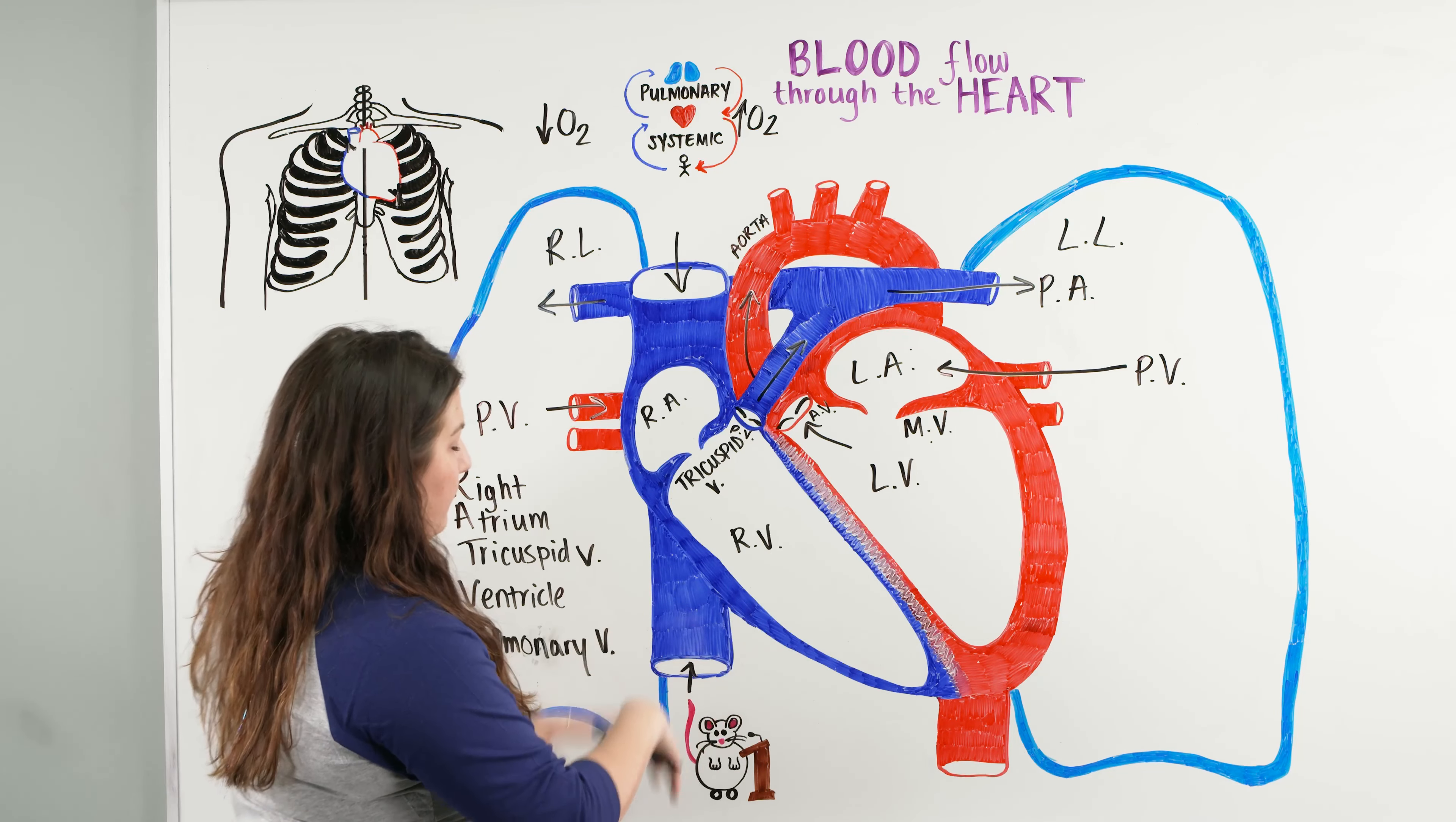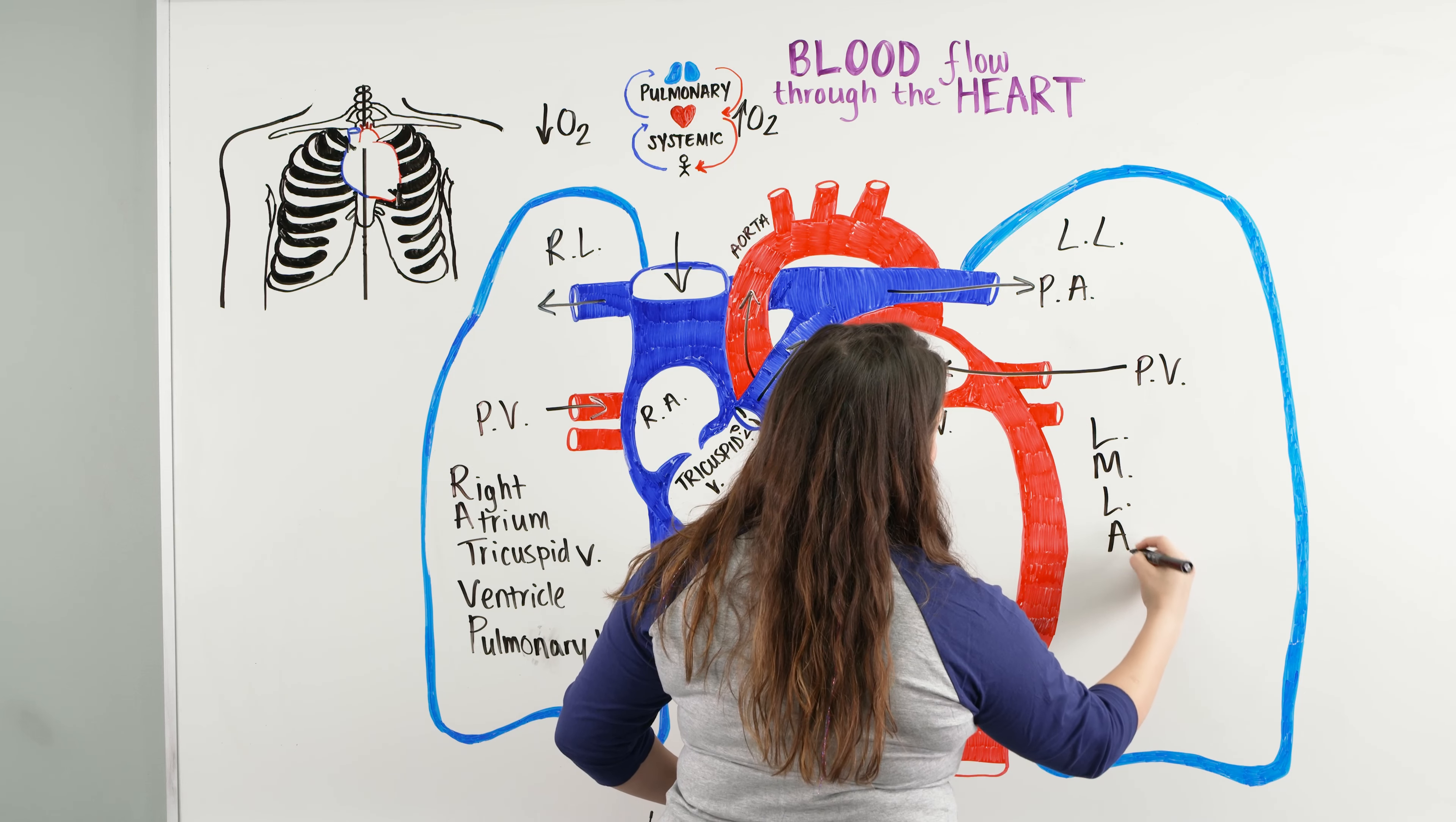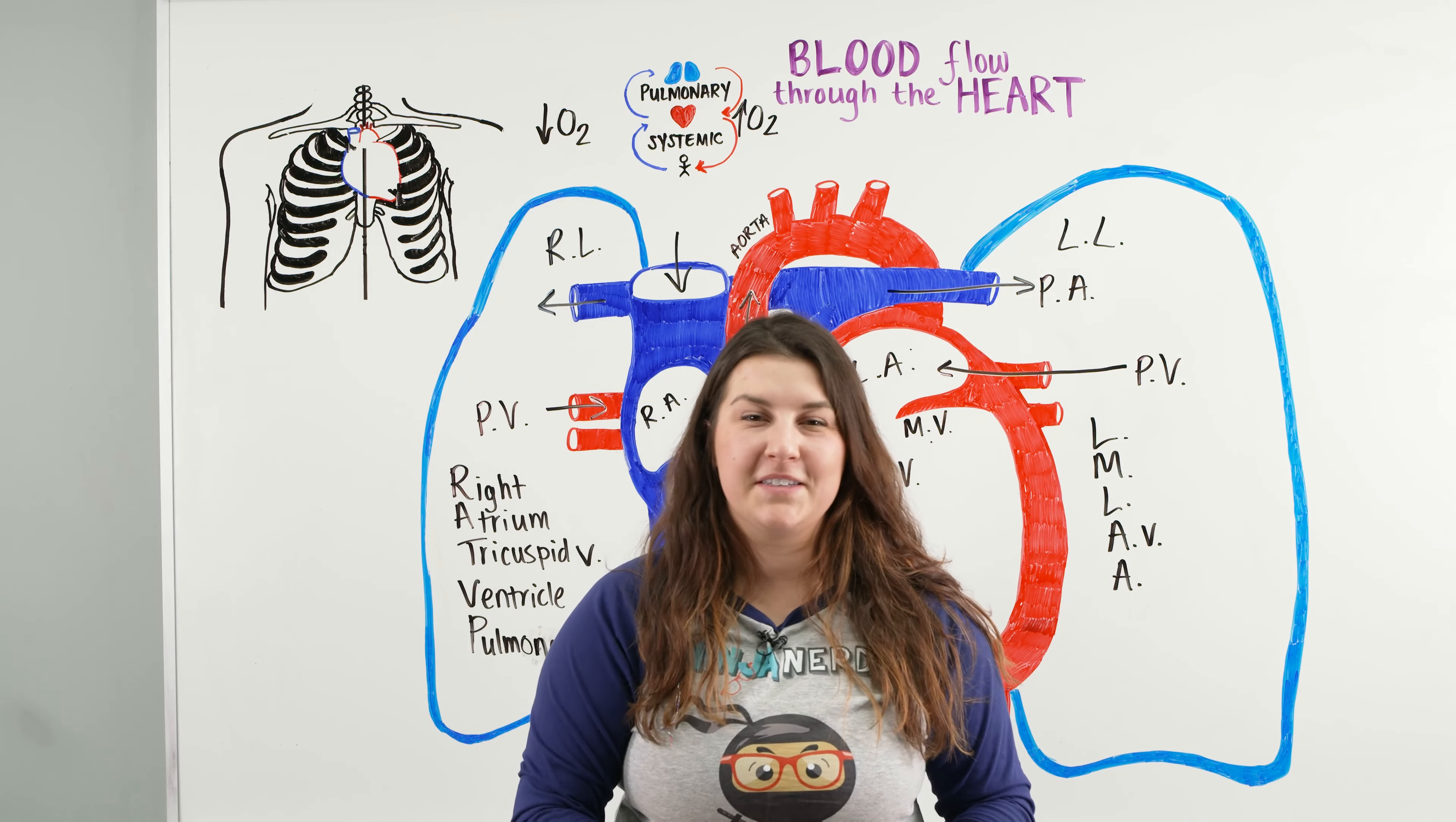So once we're in the pulmonary vein, we're going to the lung, and then we're going to the left atria, the mitral valve, the left ventricle, the aorta valve, and the aorta. And that's it. That's blood flow through the heart. Hope you guys like this video, and as always, until next time.